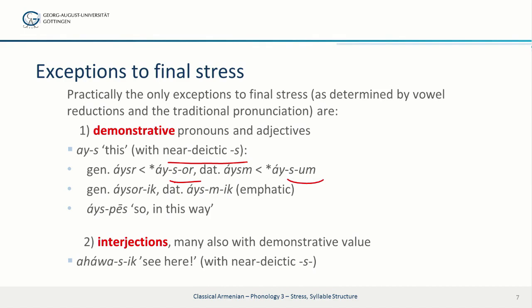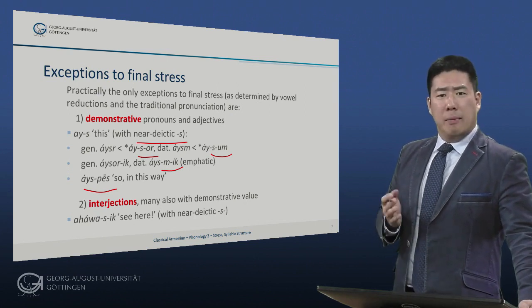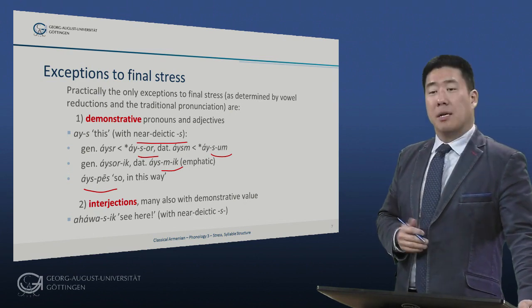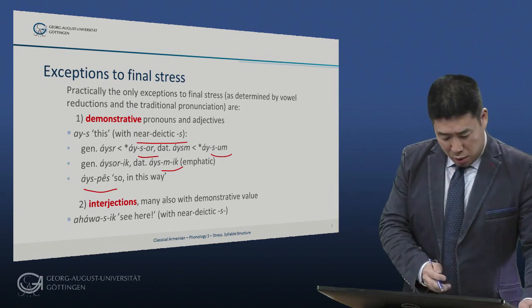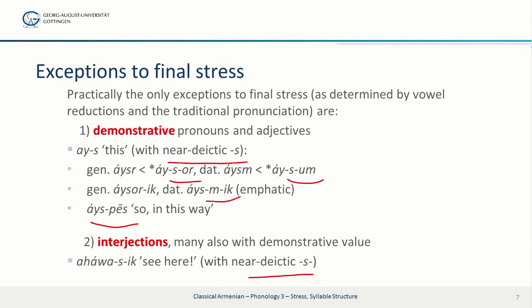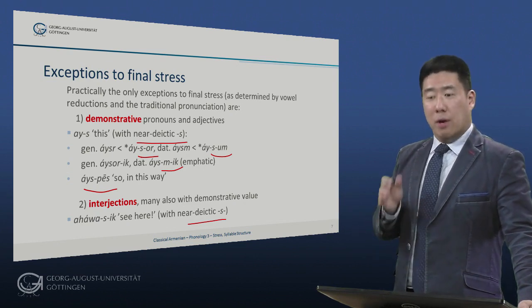So it seems that the stress was always on the first element, i. The emphatic forms i-sorik and i-smeek show, once again, the vowel reduction: u becomes zero. Finally, i-space means 'so, thus, in this way.' The other category is interjections, and many of these also have demonstrative value — for example, ahawasik ('see here'), ahawadik, ahawanik ('see there') — where once again we have the deictic element. So these are practically the only exceptions to final stress. Otherwise, stress in classical Armenian, as far as we can tell, was always on the final syllable.